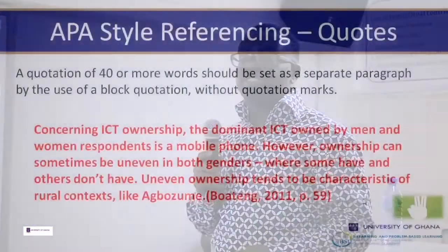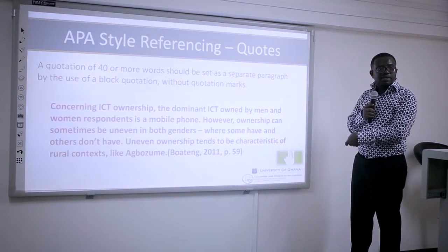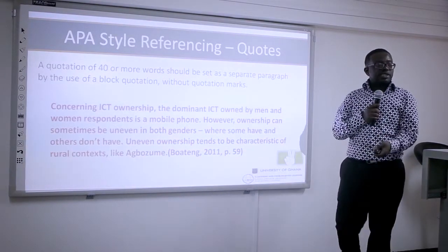Sometimes you may pick more than 40 words, especially for a definition. In that case you block and indent it in your work. The full stop comes first, and then you put in the reference — it becomes a hanging paragraph. You indent it, put the whole sentence there, and add the author, year, and page number. If the page spans more than one page, use pp. or pgs. followed by the range, e.g., pp. 59–60; if it's a single page, use p.